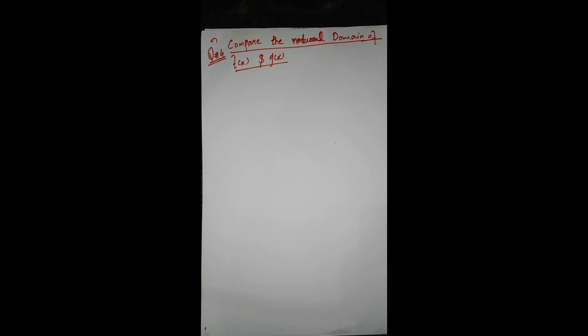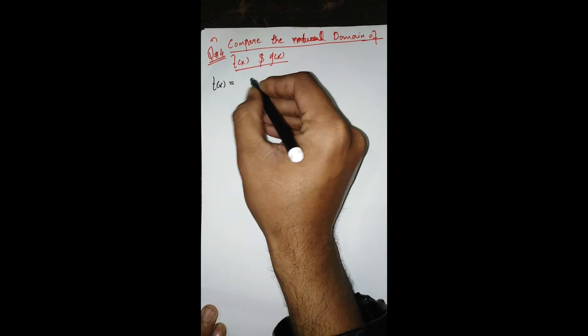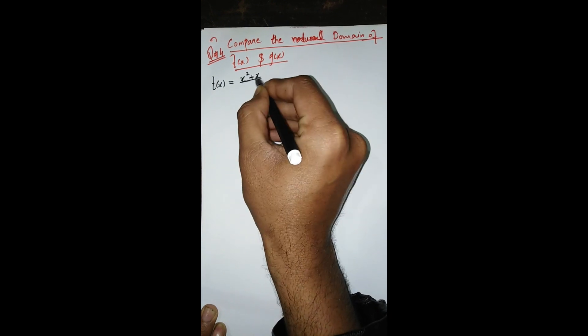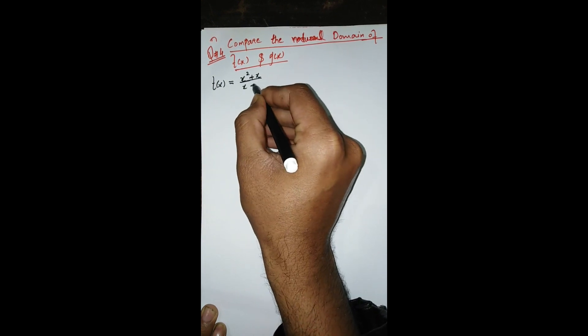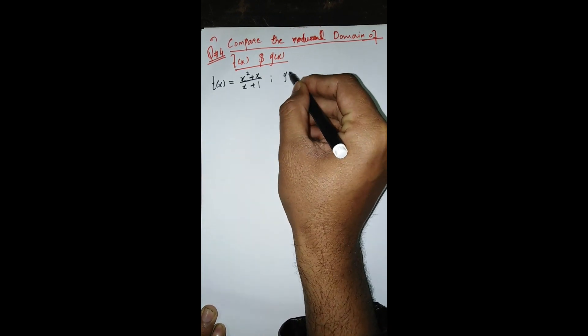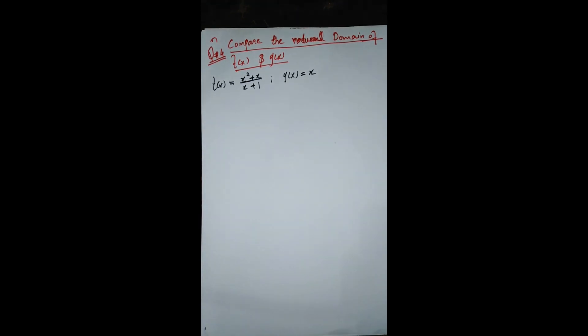Sometimes the examiner gives you two functions and asks you to compare the natural domains of these two functions. Question number four, part one: f(x) = (x² + x) / (x + 1) and g(x) = x.